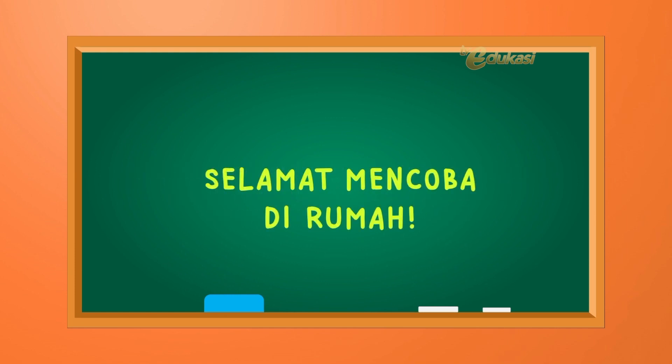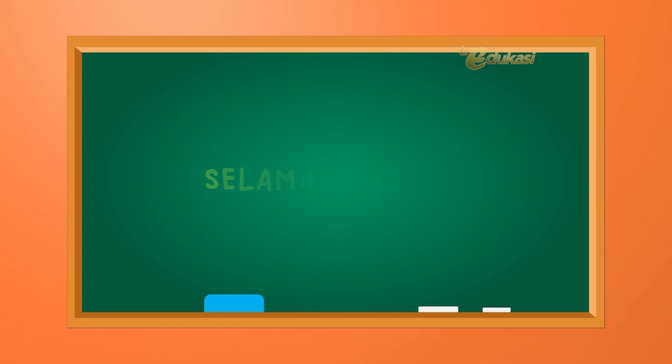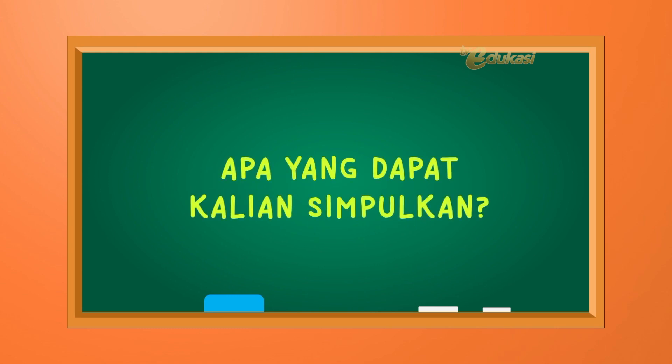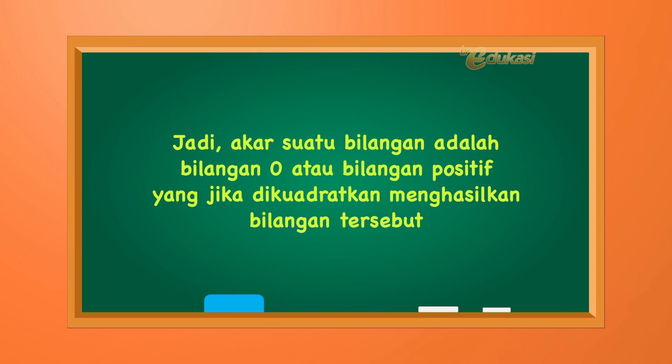Selamat mencoba di rumah ya. Anak-anak, dari penjelasan di atas, apa yang kalian dapat simpulkan? Baik, Bapak coba bantu ya. Jadi, akar pangkat dua merupakan kebalikan dari bilangan pangkat dua. Kesimpulan: akar suatu bilangan adalah bilangan nol atau bilangan positif yang jika dikuadratkan menghasilkan bilangan tersebut. Jelas, anak-anak? Mudah ya?